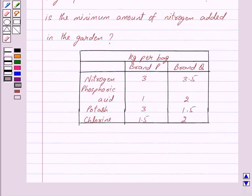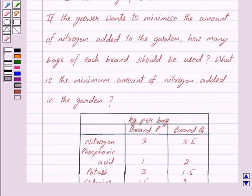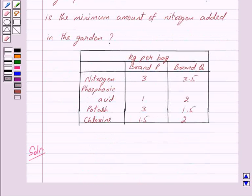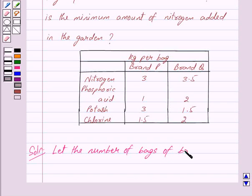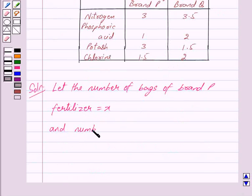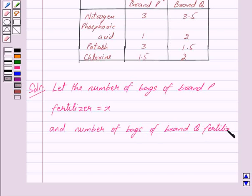And this is the table given to us. Let us begin with the solution now. We shall first formulate the linear programming problem according to the given conditions and then solve it. Let the number of bags of brand P fertilizer be X and number of bags of brand Q fertilizer be Y.